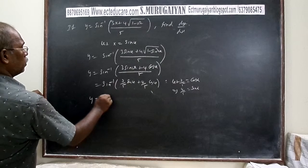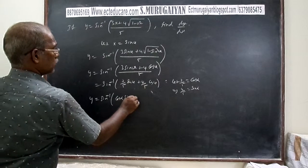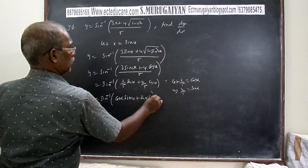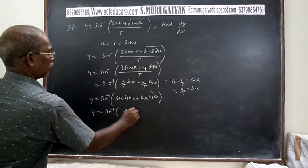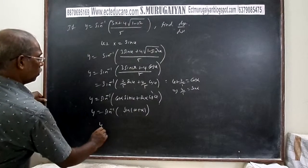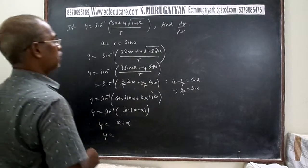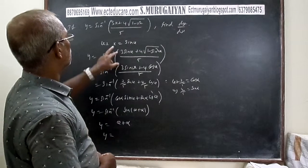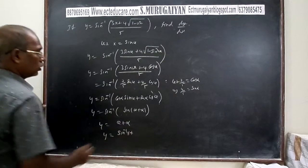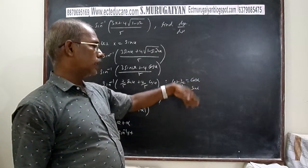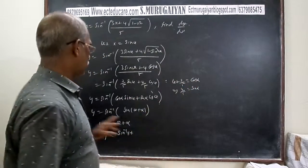Then y equals sin inverse of (cos α · sin θ + sin α · cos θ), which is sin inverse of sin(θ + α). Therefore y = θ + α. Substituting back, θ = sin⁻¹(x) and α = cos⁻¹(3/5).